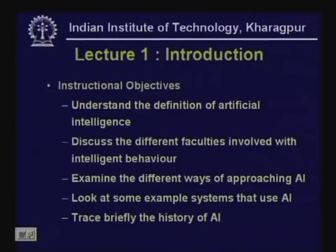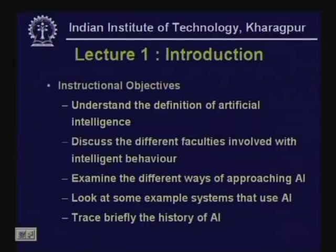The instructional objectives of today's lecture: number one, to understand the definition of artificial intelligence — what AI is and what it is about. Second, we will discuss the different faculties involved with intelligent behavior and the different components that define intelligence. We will also examine the different ways of approaching AI, look at some well-known example systems that use AI, and take a brief look at the history of AI.